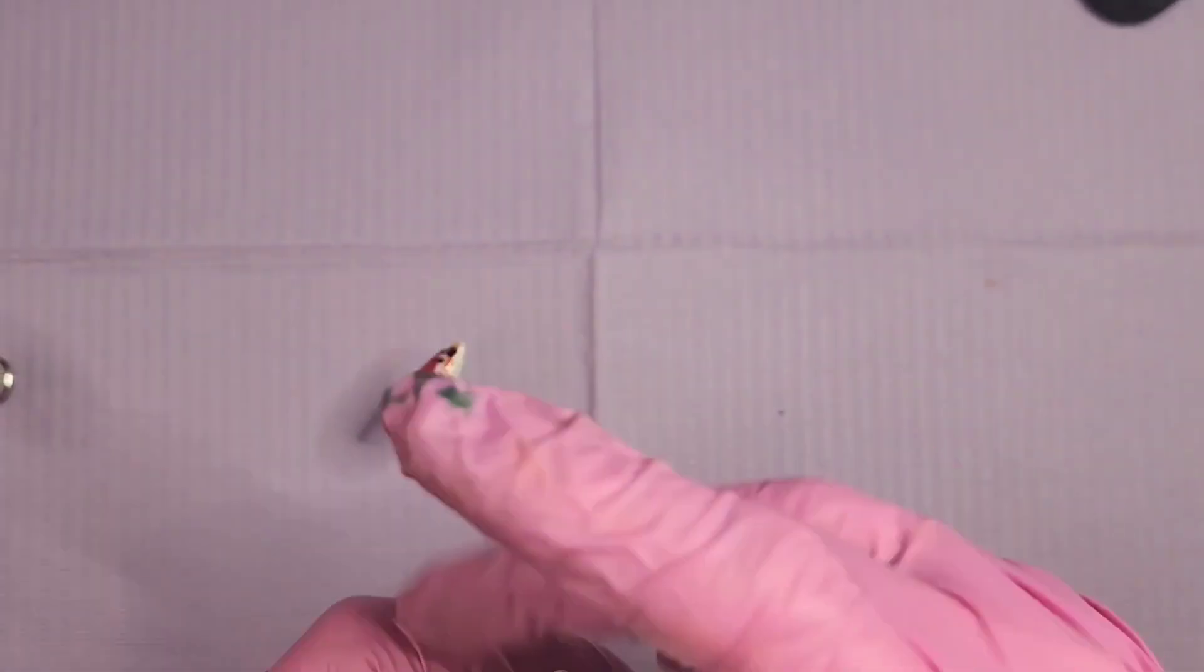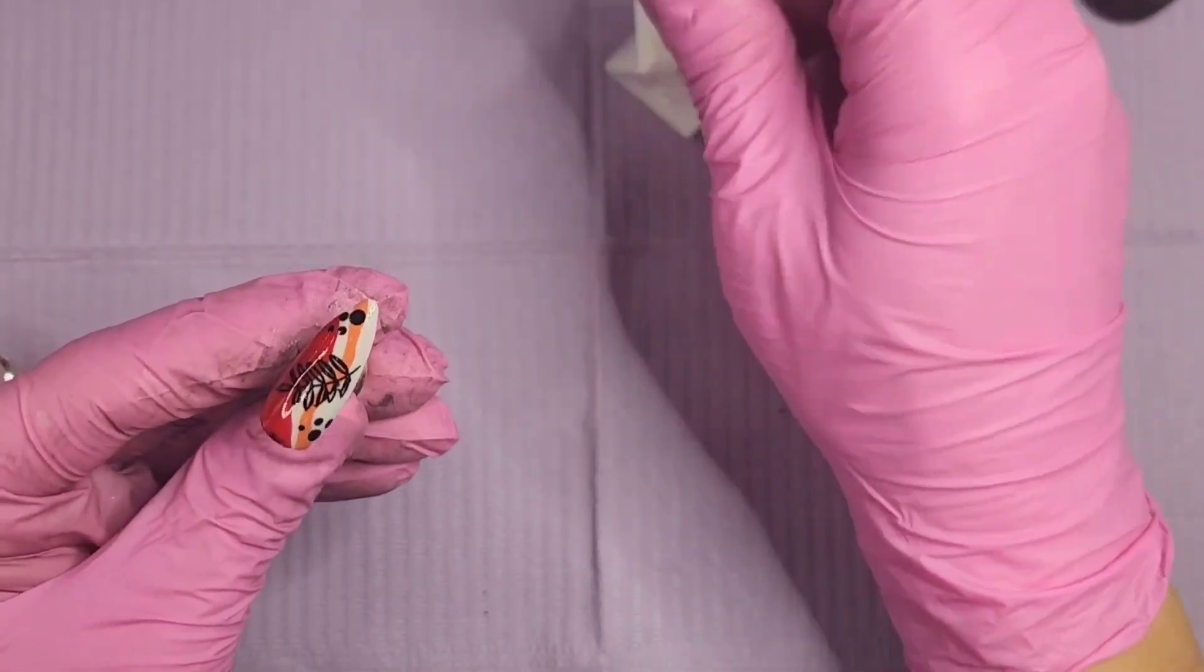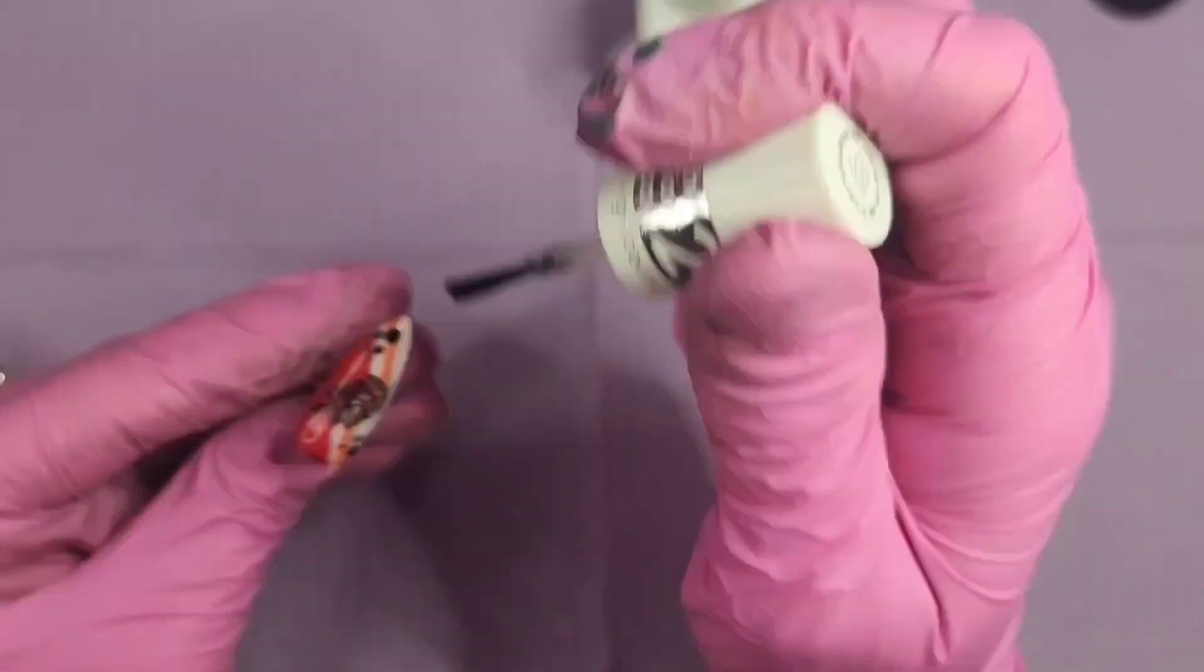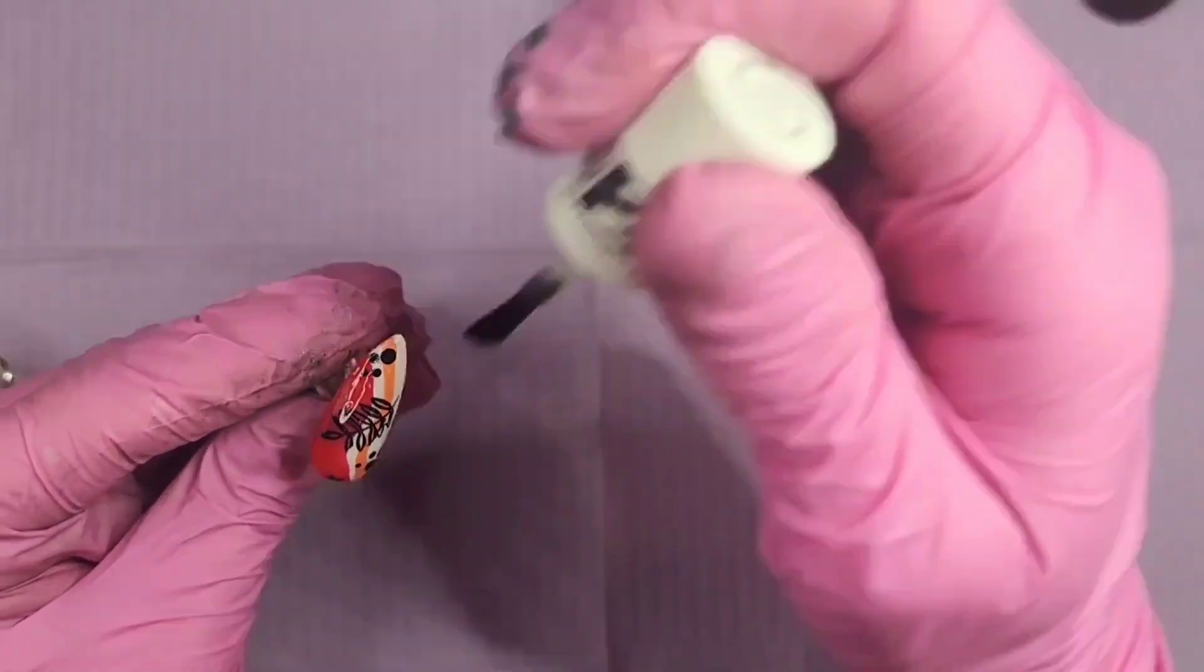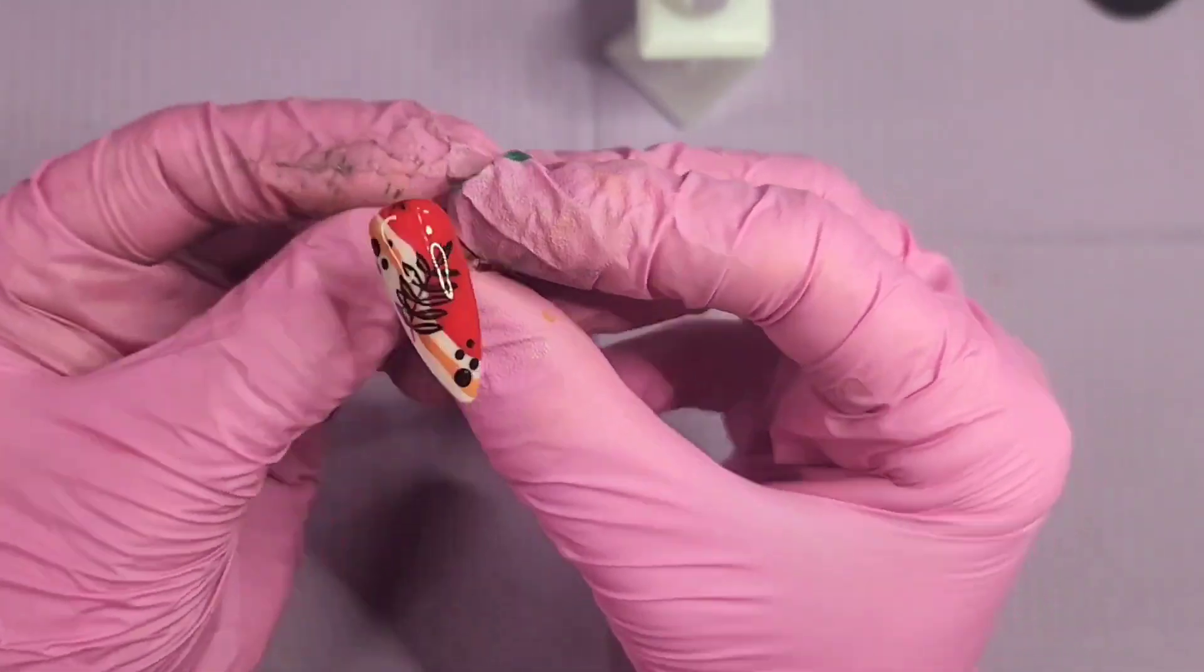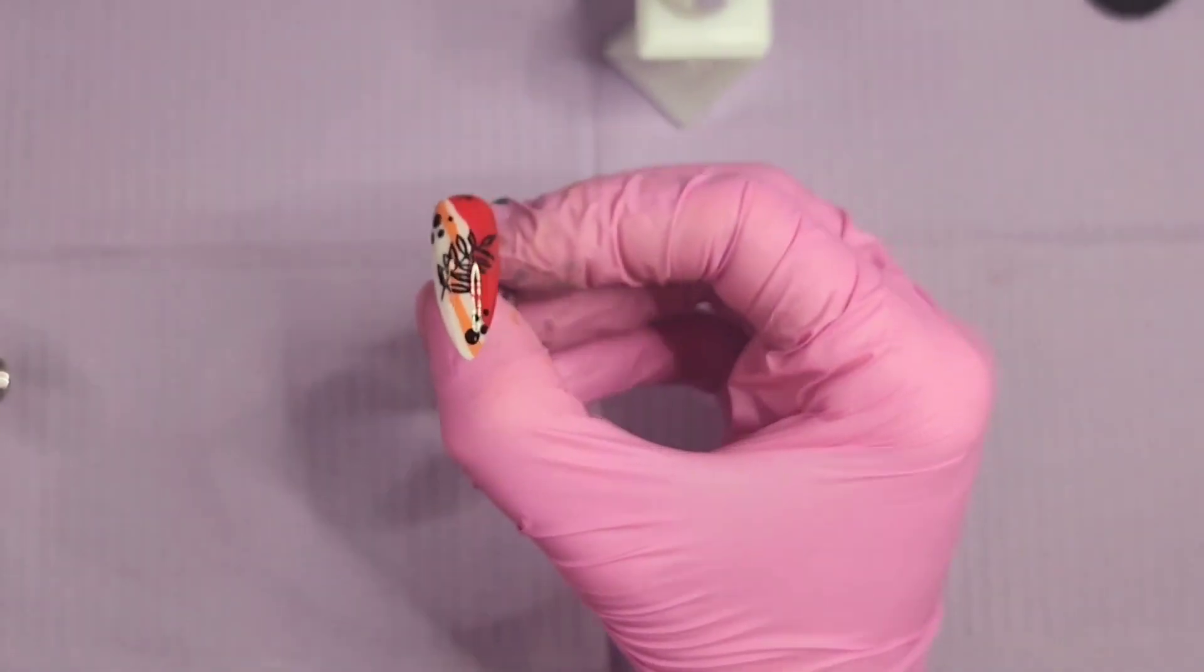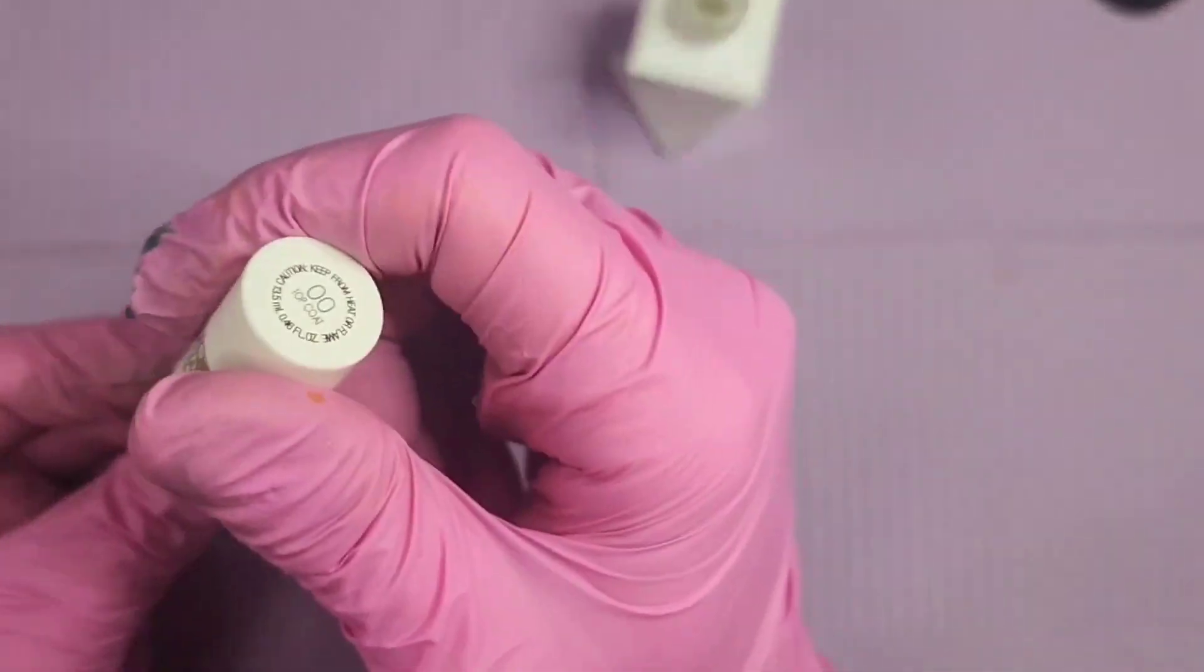That was a very short break. I did use my Seche, this is called Gel Couture. Why they do that I don't know, because I feel like it could be really confusing to people. It is not gel, it is just nail polish. It's actually a really good top coat and I love it. It's really shiny, especially for nail polish.